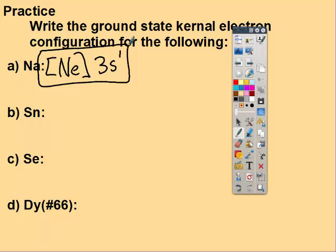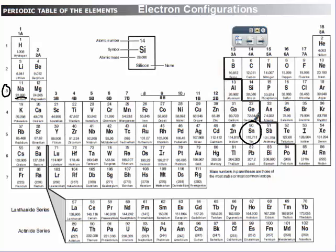So the next one is tin. Here's tin, following that up, here's number 50. So the noble gas that comes before it would be krypton, number 36. It can't be xenon because xenon comes after it. So it's going to be krypton in brackets, and then we start reading from here. So this is 5s2.